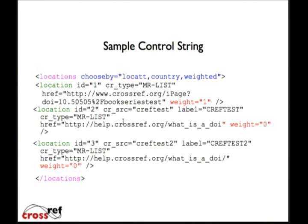There are a couple of things of interest in the control string. The labels — in our case I just have our test user information. The CR source and the label are somewhat different. The source is basically the person who did the uploading of that particular URL. In the co-access situation, this is all going to be co-access. Since we're going to be generating this control string ourselves, we won't be expecting the users to have their input. However, part of the label will contain information about the depositor so that we can present who is involved in the actual co-access.